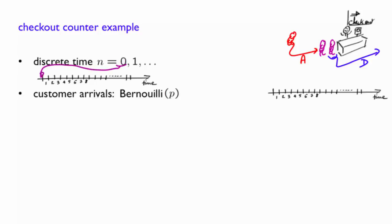For arrivals, let's assume that customers arrive according to a Bernoulli process with parameter p. At time steps here, there is an arrival. Perhaps this customer here. And at 6, there is another customer. So during each time interval, independently of what happened in the past, with probability p, a new customer arrives. And with probability 1 minus p, no one comes.